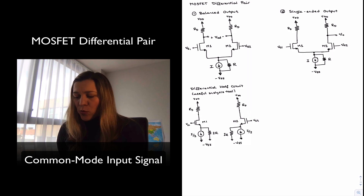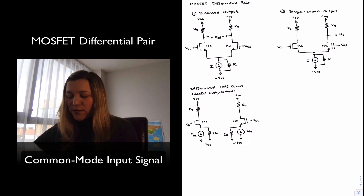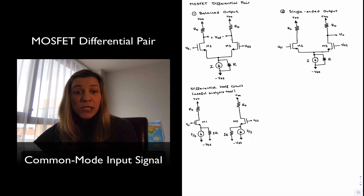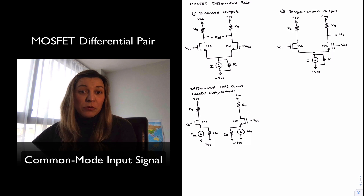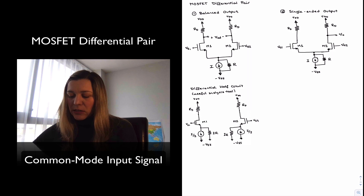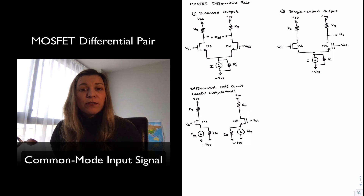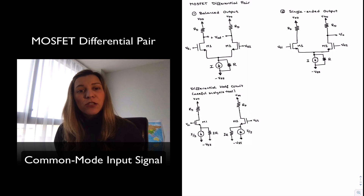So we have our MOSFET differential pair. We have seen that it consists of two MOSFET transistors, M1 and M2, drawn here, connected such that their sources are connected together. Each one of them is connected to a supply VDD via an RD resistor. The sources are then tied to a current source, which provides the biasing for the two branches — a current source labeled as I. Under balanced conditions, if the input signals applied were zero, we will have the same amount of current flowing through both branches, dividing equally, assuming the two branches are symmetrical and transistors are well matched — a fairly reasonable assumption in an integrated circuit.